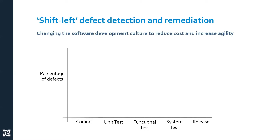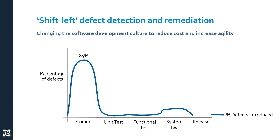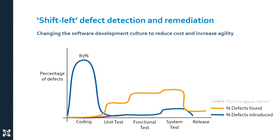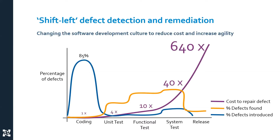This chart was first defined in 1996 by Capers Jones, and it's still relevant today. Most software defects are introduced during the coding phase of development, but most defects are found during the later stages where it costs much more and is more risky to fix.